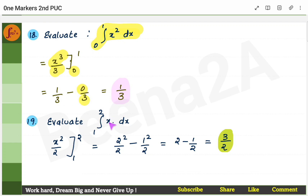Another definite integral example: the integral of x from 1 to 2. The power of x is 1, so increment to 2 and put 2 in the denominator: x²/2. Apply the limits — substitute x = 2 to get 4/2 = 2, substitute x = 1 to get 1/2. Subtract: 2 − 1/2 = 3/2.